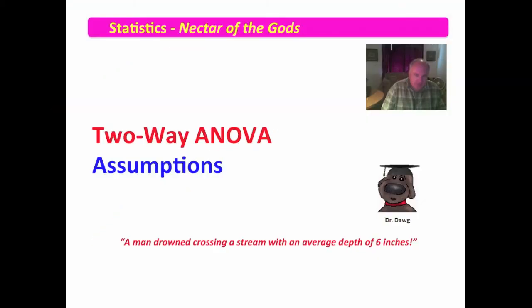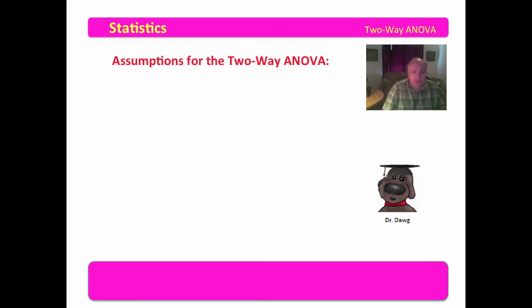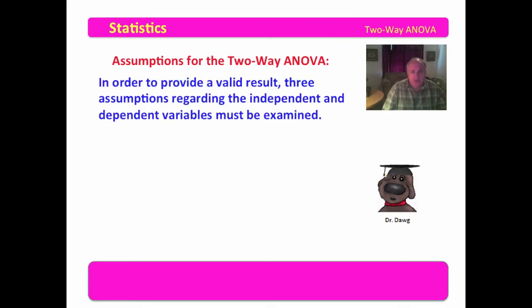Welcome back, my friends. In this video, we're going to examine the assumptions that are required in order to conduct a two-way analysis of variance, or a two-way ANOVA. Assumptions for the two-way ANOVA really include three specific things regarding the independent and dependent variables.